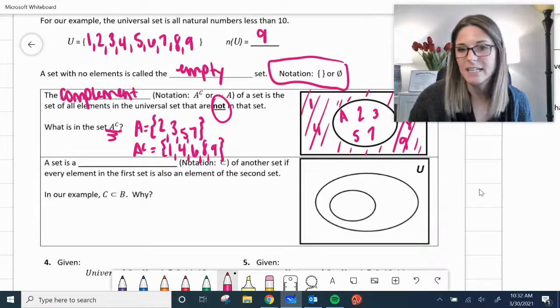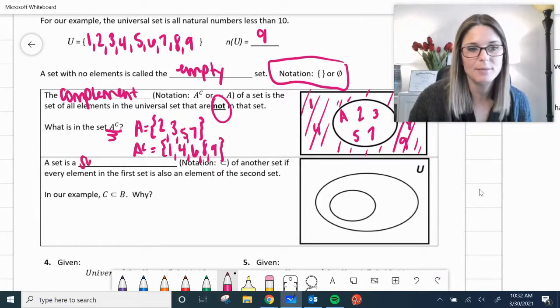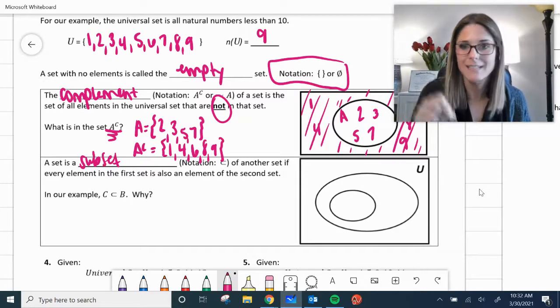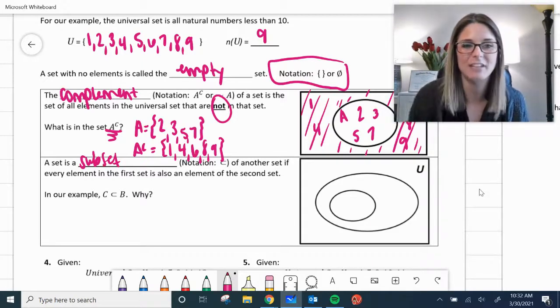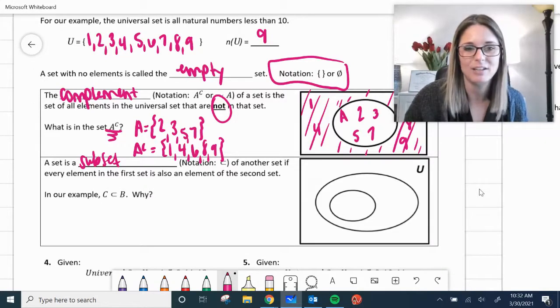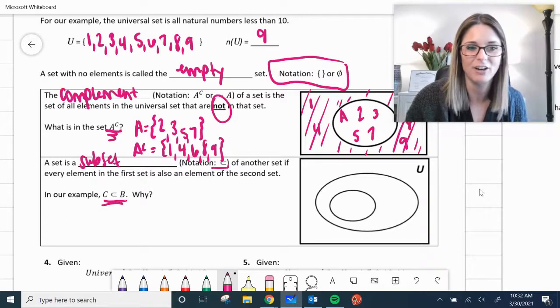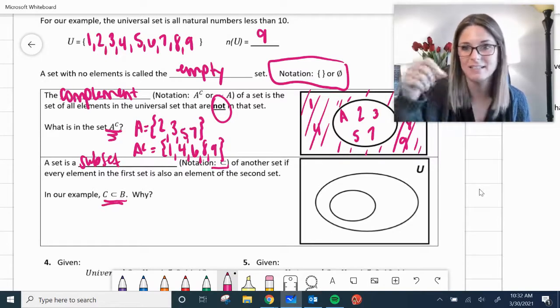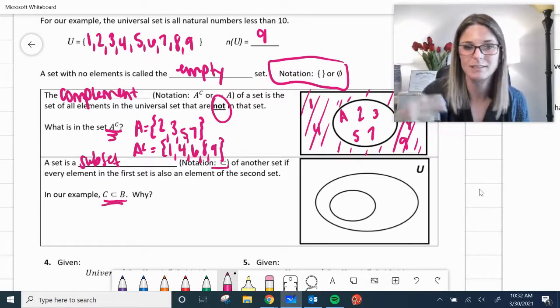A set is a subset. A set is a subset of another set if every element in the first set is also an element of the second. And look at your notation there. You can see it being used there. In our example, C is a subset of B. Why?